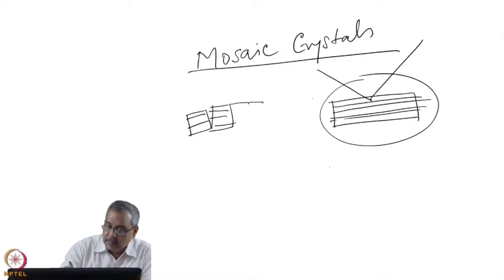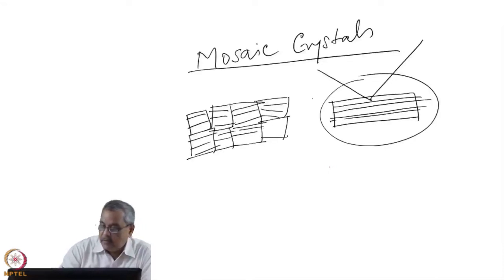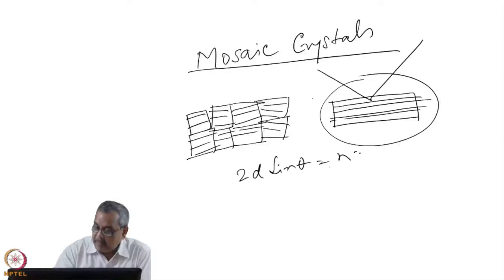The crystal is broken into crystallites which have slight angles with respect to each other. Then for 2d sin θ equal to nλ, if this angle θ monochromator varies a little, then we will also have spread on lambda and that's a desirable thing.